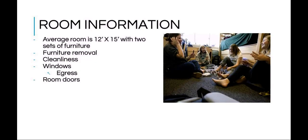The average room is 12 feet by 15 feet with two sets of furniture. Furniture cannot be removed at any point in time and the room must remain clean. Windows must always be accessible as the second point of access into rooms in case of fire concerns. Room doors, door frames, and the walls surrounding doors cannot have anything on them like decorations or signs.